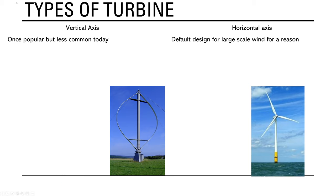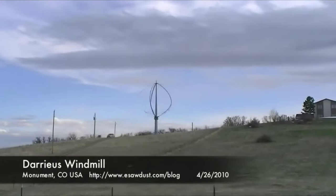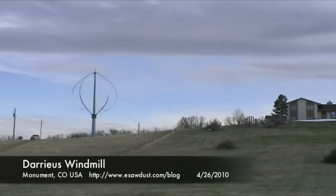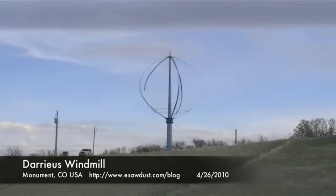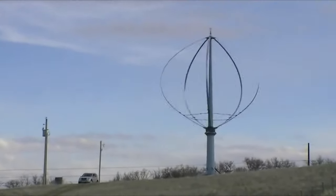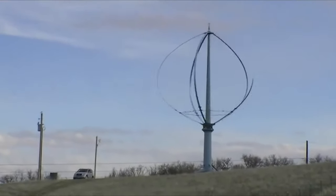Looking at the various concepts of turbines — this is more to give a historical perspective. Vertical axis turbines like the Darrius design used to be quite popular in the 1970s and 1980s but are very uncommon today. Every so often someone on the internet tries to get investment on Kickstarter to rebuild one of these, but there are reasons they're not used much anymore.